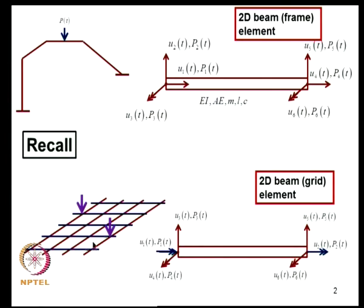In a grid structure, which is again a planar structure, the load acts normal to the plane of the structure and the load resisting mechanism is through twisting and bending. A typical grid element will have 2 twist degrees of freedom and 4 degrees of freedom corresponding to the bending action.